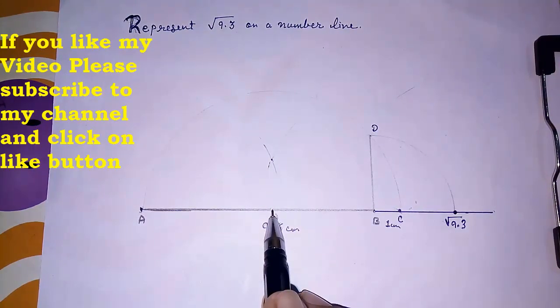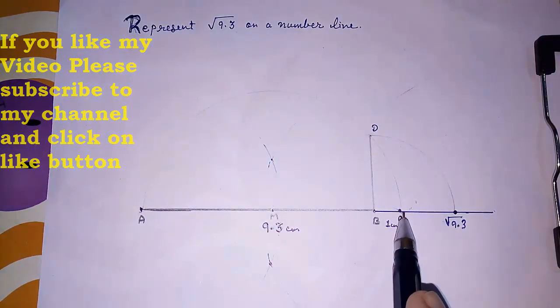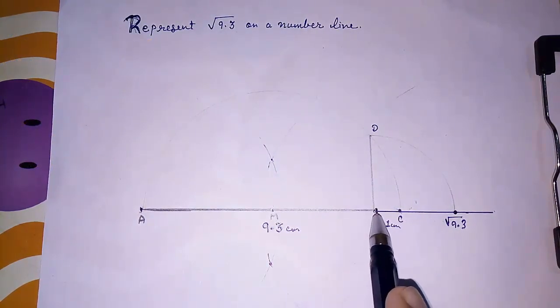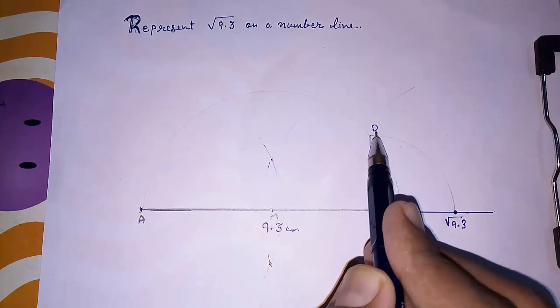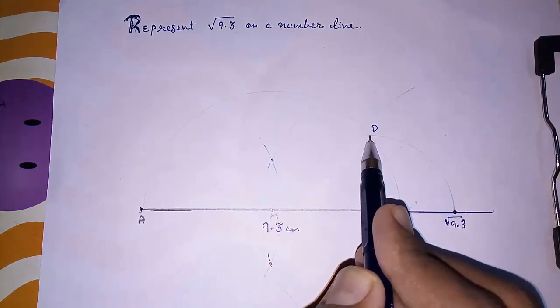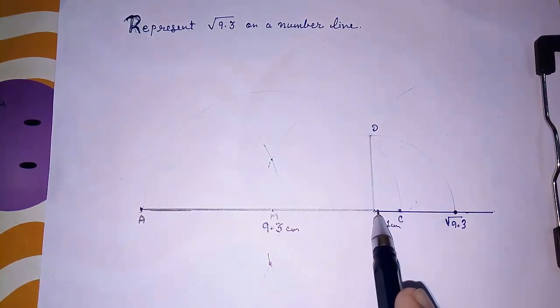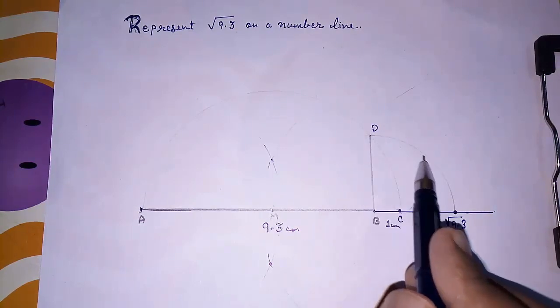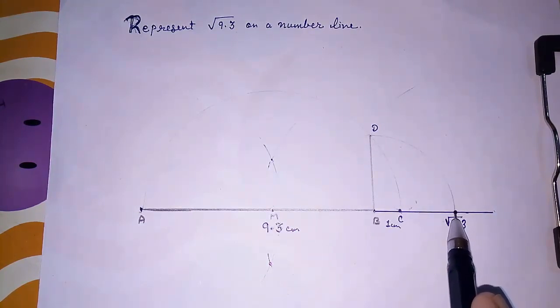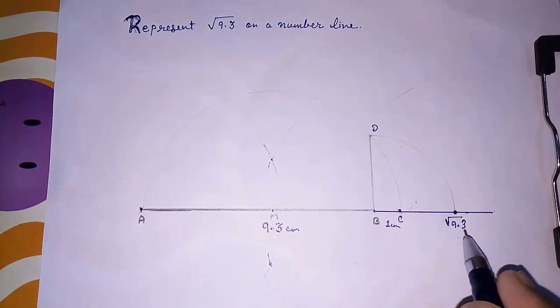Fourth step: taking this M as center point, draw a semicircle. Fifth step: draw perpendicular from B, and it will intersect somewhere on the semicircle. Give that point D. Now taking B as a center, draw an arc. And where the arc is intersecting, that point will be your root 9.3.